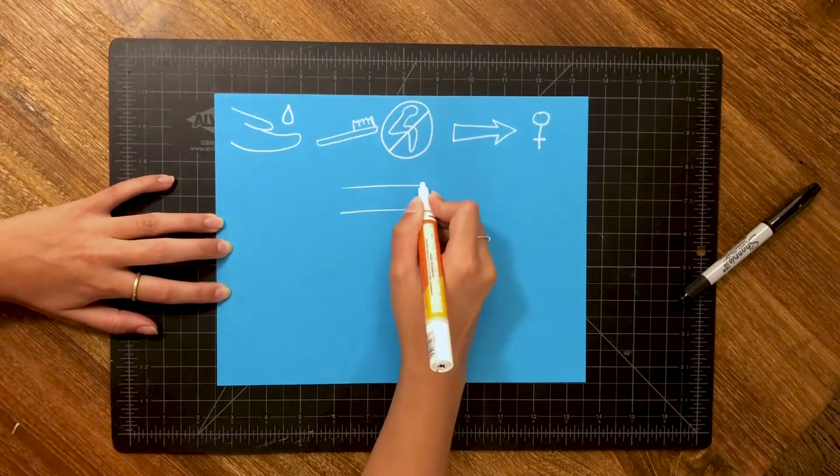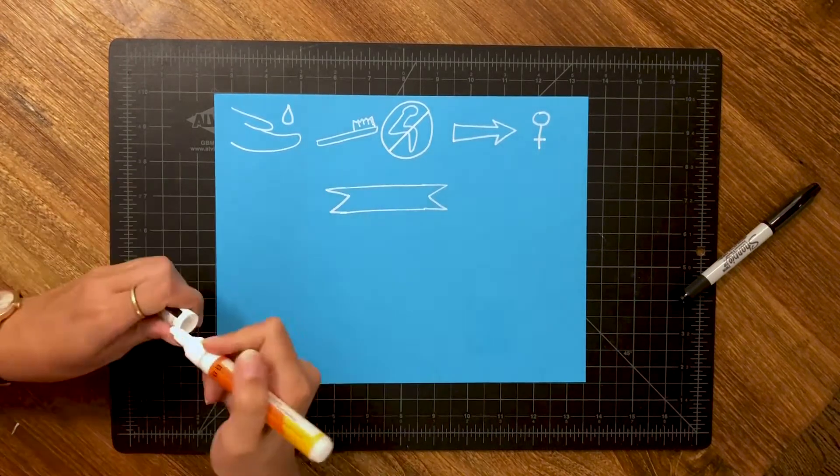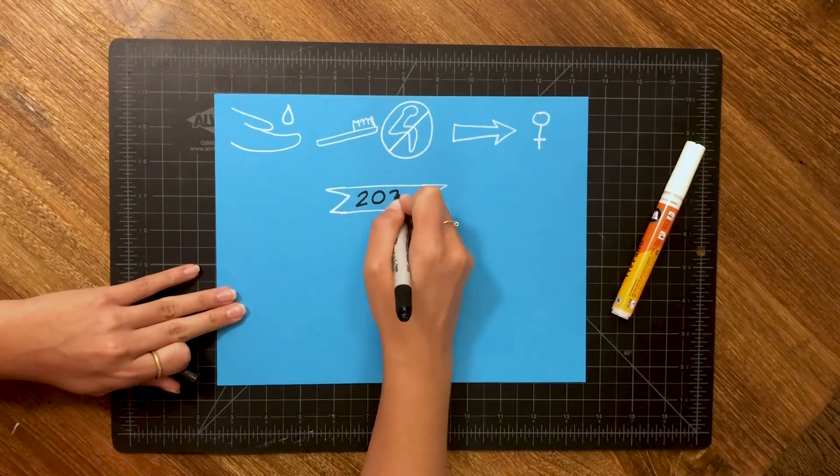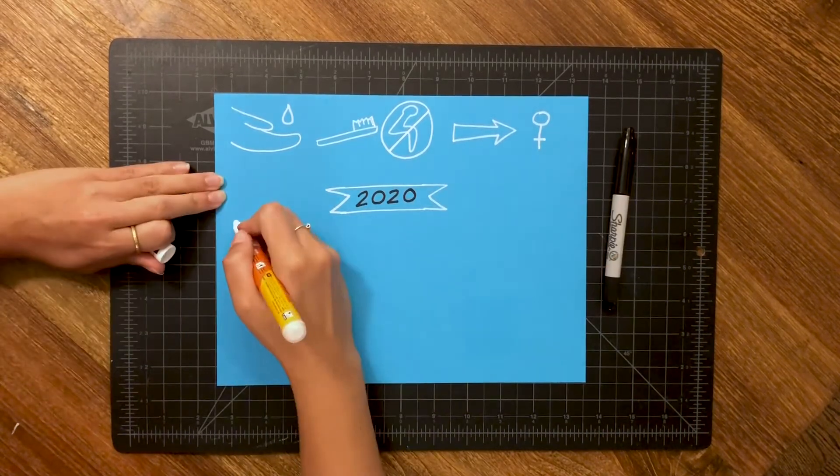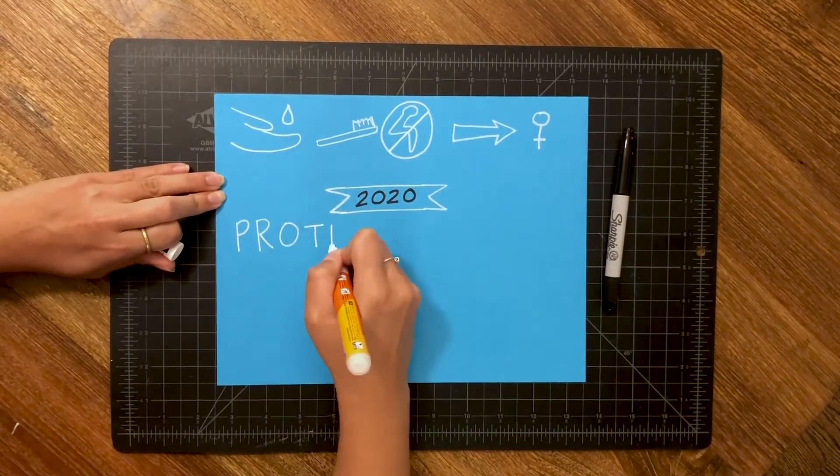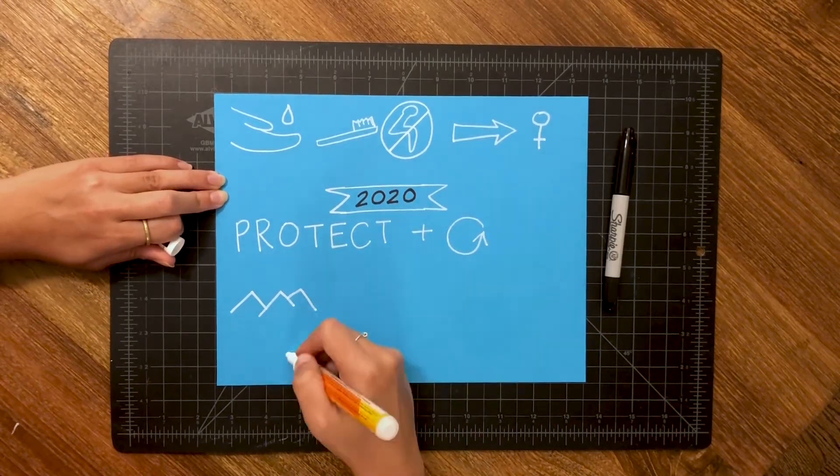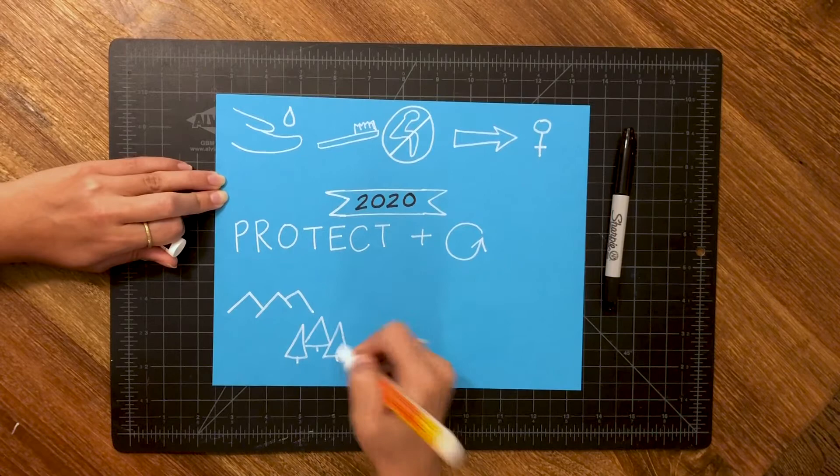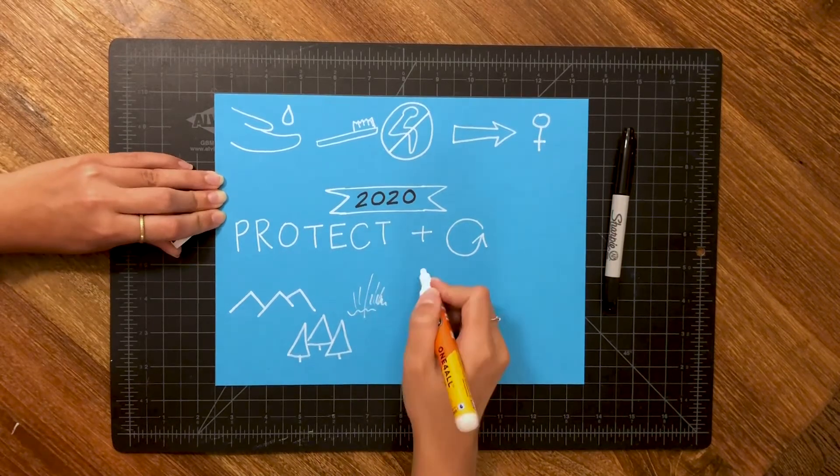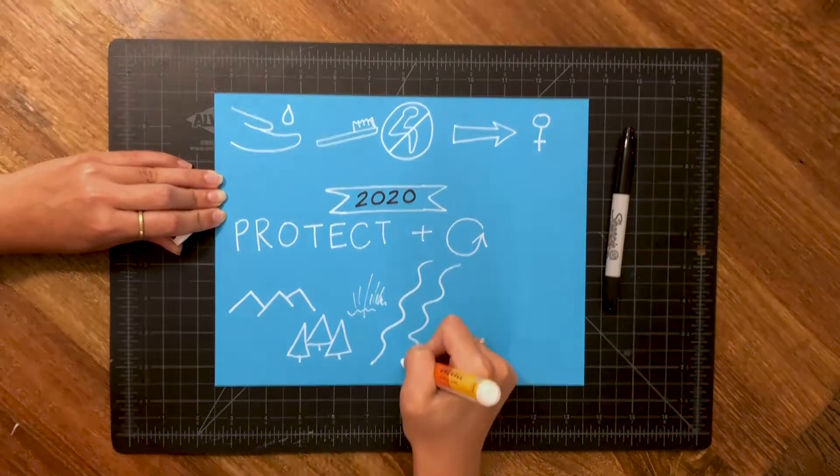These targets are obviously tied to supporting humans, but our well-being is deeply connected to nature. By 2020, protect and restore water-related ecosystems, including mountains, forests, wetlands, rivers, aquifers, and lakes. These are just a few of the targets for this SDG.